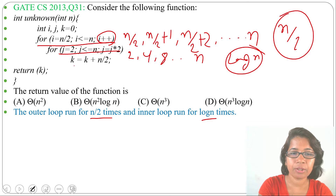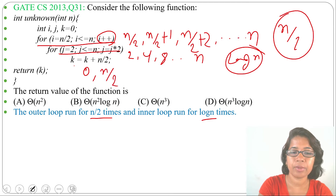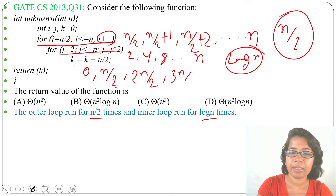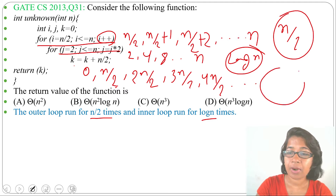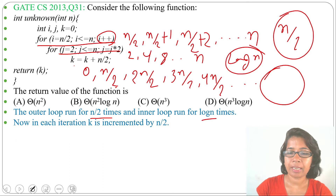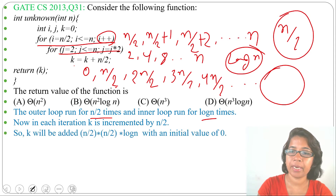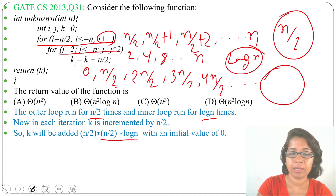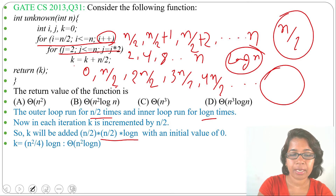Every time through the inner loop, k is incremented by n/2. So the initial k value is 0, then n/2, then 2*(n/2), then 3*(n/2), and so on. The question asks what the final k value will be. n/2 is added n/2 times (outer loop) multiplied by log n times (inner loop). So the total is (n/2) * (n/2) * log n = n²/4 * log n. Asymptotically, this is Θ(n² log n), which is option B.